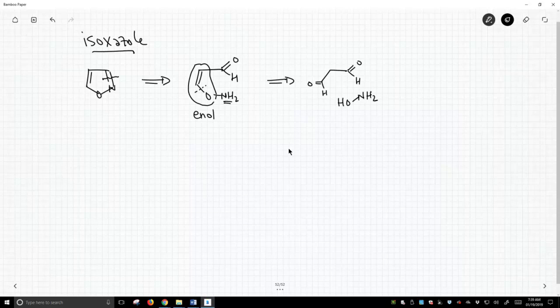So these would be our two starting materials that we bring together to form the ring. This molecule is called hydroxylamine. It's an amine with an OH on it.